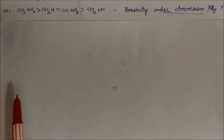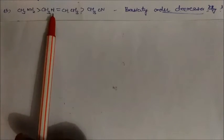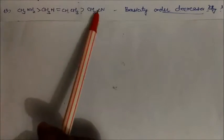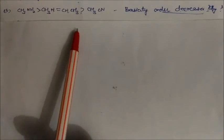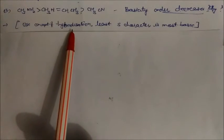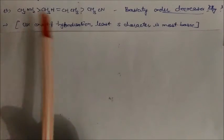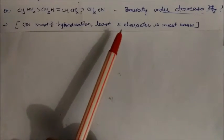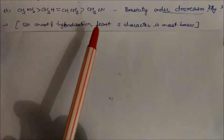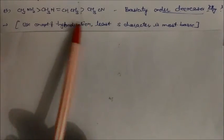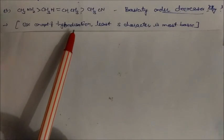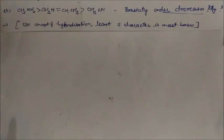The basicity order of methylamine series — CH₃NH₂, (CH₃)₂NH, (CH₃)₃N — decreases in that order. You can determine this using the concept of hybridization: if the s-character of the nitrogen orbital is less, the compound is more basic; if the s-character is more, it is more acidic. Try to solve this using the hybridization concept yourself.